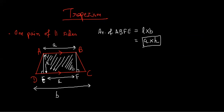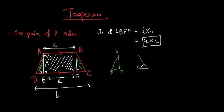Now if I pay attention to this part, what is the shape? It's a right-angle triangle — triangle AED. And similarly over here it is triangle BCF. I really don't know what the value of this part and this part are, but I'll take the left base as x. Can anyone tell me what will be the value of FC?